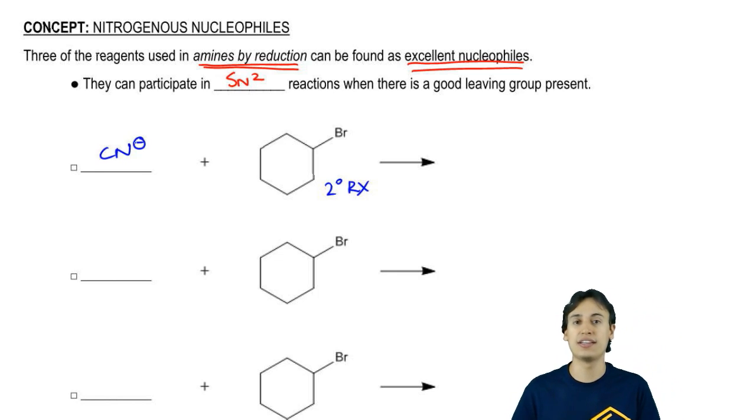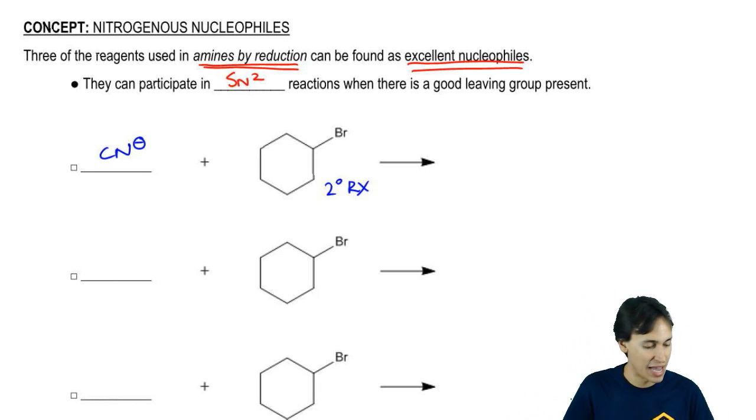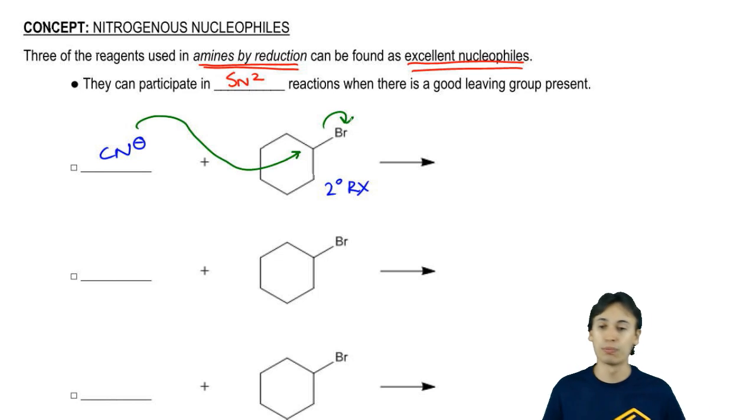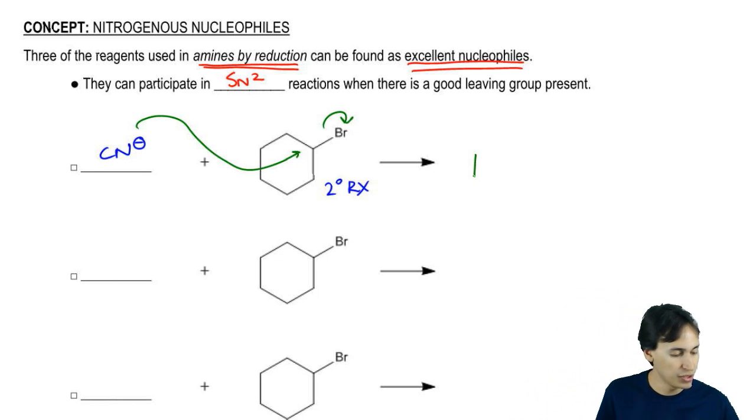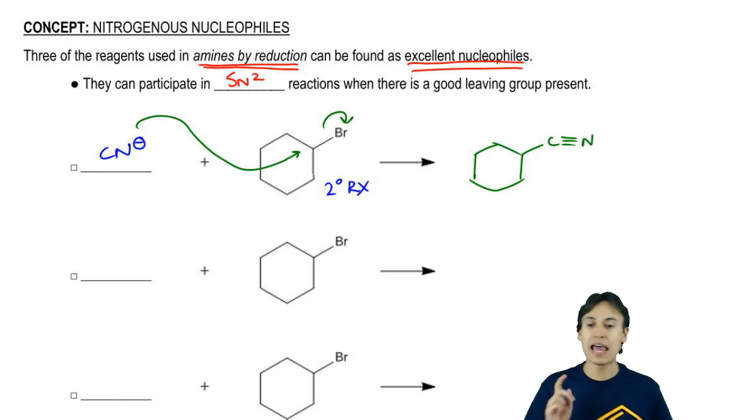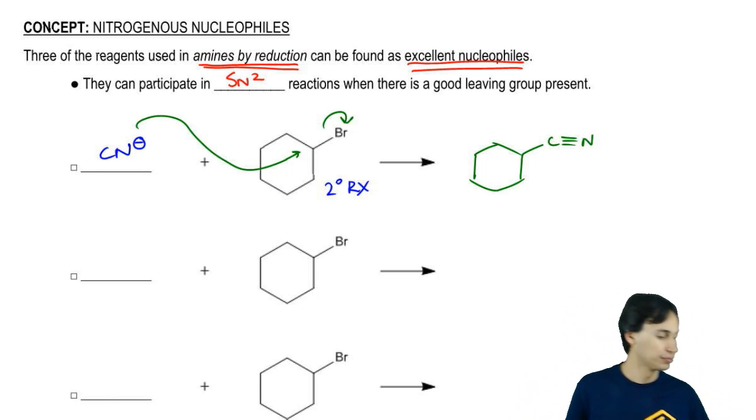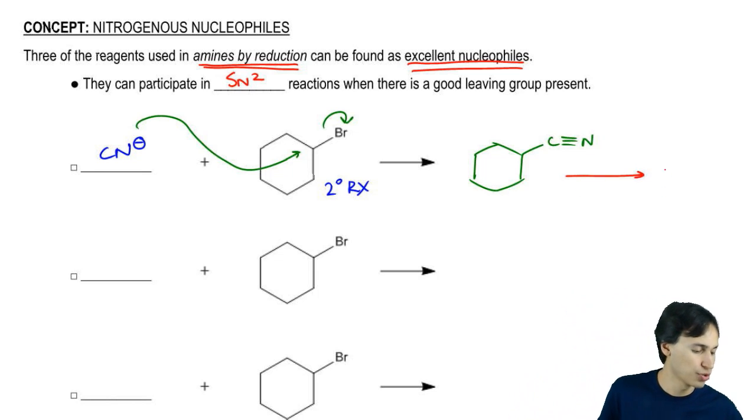Remember, CN- is a strong nucleophile that we used plenty in Organic Chemistry 1. This would do a backside attack. It would attack the backside, it would kick out the bromine and what would you get as a consequence? Well, we would get a product that now looks like this, C triple bond N. Now that we have a nitrile, how can I turn this into a primary amine? Do you guys remember any reagents that would work on this to make it into a carbon with an NH2?